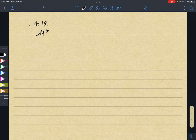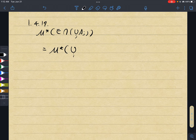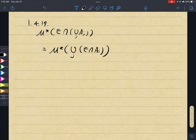So we have to show that μ*(E ∩ ∪Aj) equals μ*(∪(E ∩ Aj)). This is a property that holds due to De Morgan's law, I think.